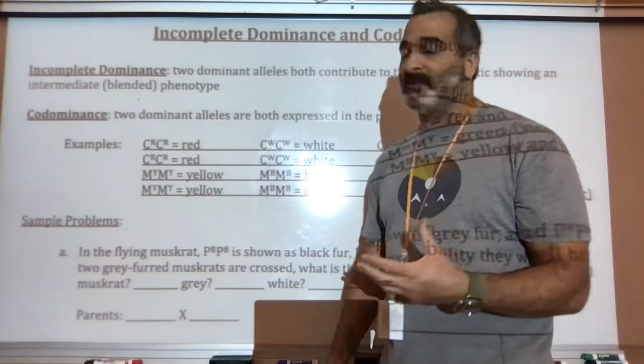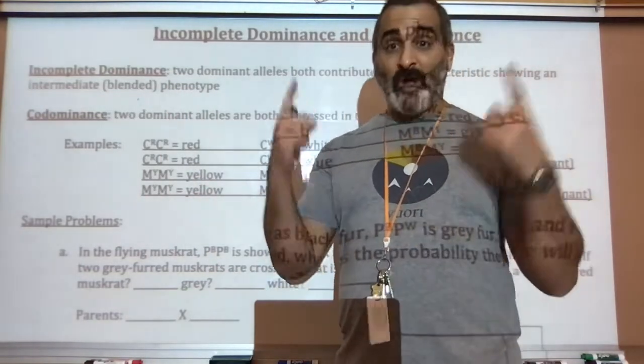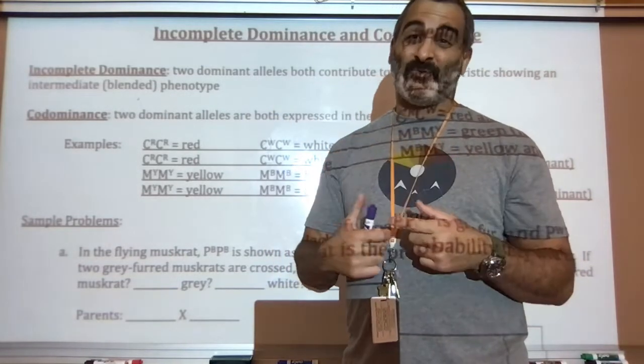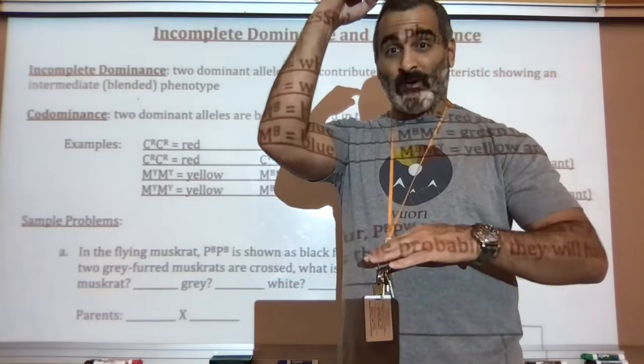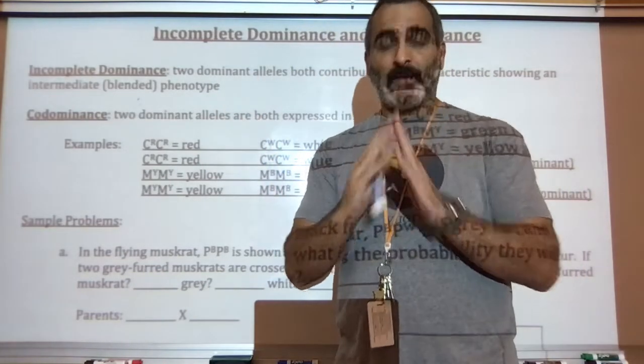Incomplete dominance is the type of genetics cross where you get two dominant genes, they meet, and they form something in the middle. So it's kind of like tall, short, medium, red, white, pink in the middle.